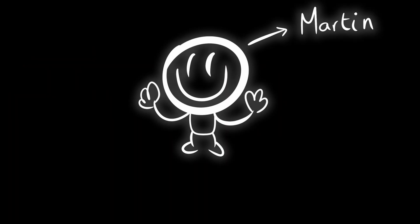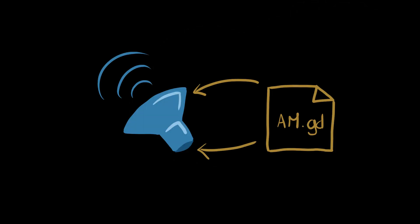Welcome back to QuantumCode, I'm Martin. This is the 11th tutorial dedicated to creating an original 2D shooter game in Godot Engine. In this tutorial I will teach you how to add sound to your game. We will create an audio manager so we will be able to play music and sound effects from it. It will be easy and flexible so you can adapt it for your games. Let's dive straight into it.